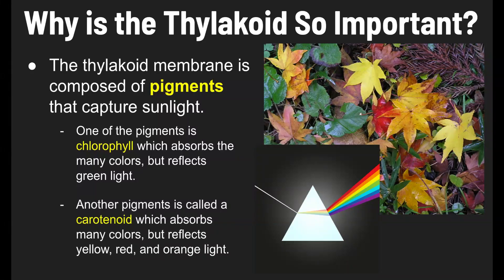Another pigment within plants is called carotenoid. Think of the word carrot — so you can probably predict what color this one's going to reflect. The carotenoid pigment absorbs many colors, but it reflects these warmer colors like yellows, reds, and orange. So pigments are very important for photosynthesis to happen — they're needed in order to absorb sunlight.